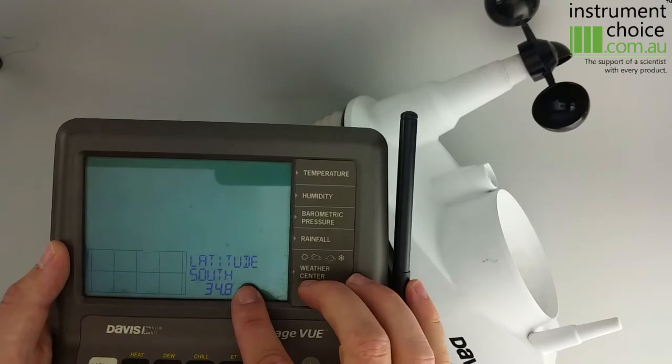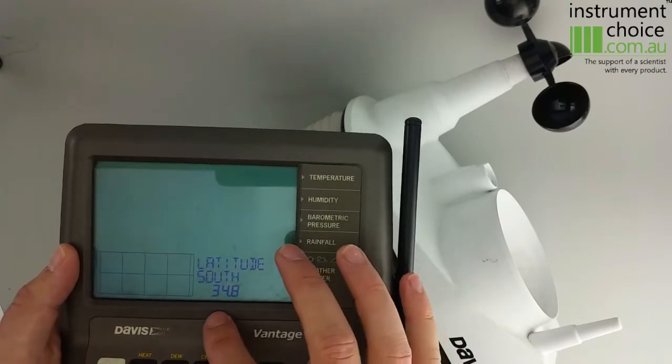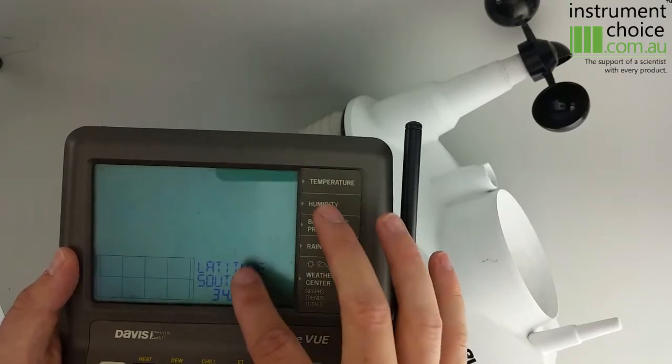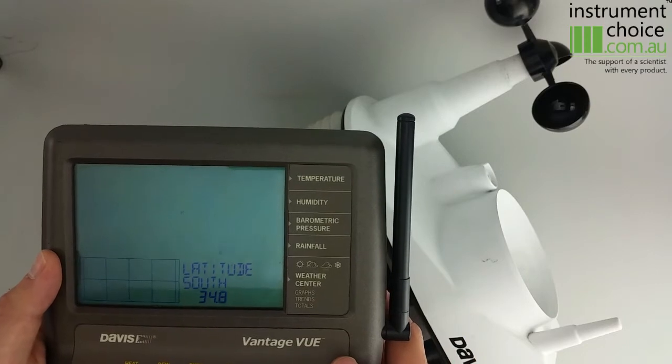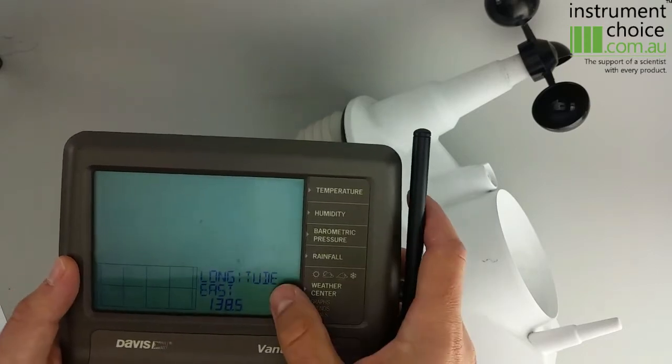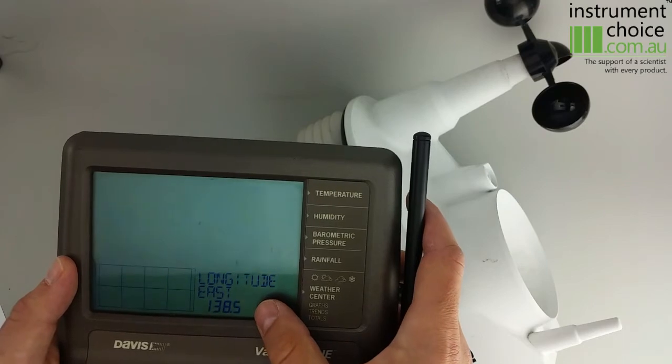We then go through and set up our latitude and longitude. In our particular case, it's 34.8 degrees south. We found that through Google Maps, which you can also do yourself. And then the longitude is 138.5 degrees east.